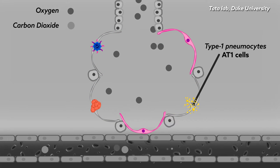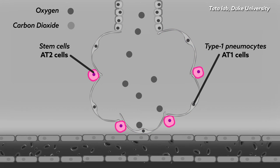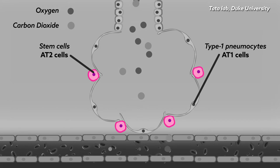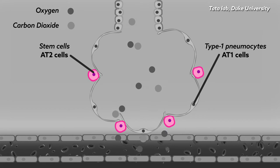Fortunately, lung tissues also have specialized stem cells, called AT2 cells, that can replace damaged AT1 cells. But exactly how these cube-shaped AT2 cells generate large, flat AT1 cells has remained something of a mystery.